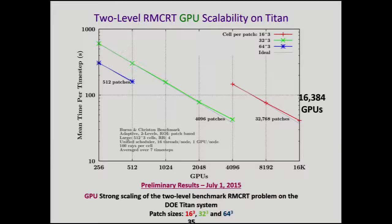This has proved spectacularly successful. Alan Humphrey and Dan Sunderland and Todd Harmon did wonderful work on this. We have strong scaling out to 16,384 GPUs on Titan for this calculation. You'd expect ray tracing to go well on a GPU — that's what they were originally designed for — but it was the communications piece that actually scaled very well because of the use of mesh refinement. I've got similar results for all the CPUs on Titan — that works well too. The trade-off between communication and computation is quite sensitive but tunable by this mesh refinement approach.